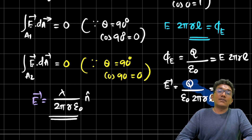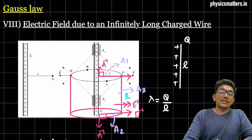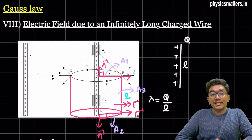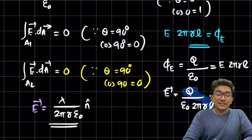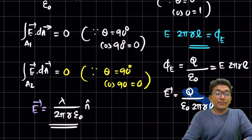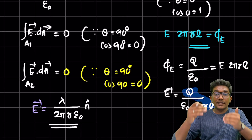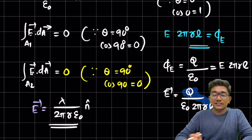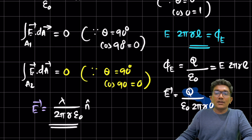So the final equation for the electric field due to an infinitely long charged wire is E = λ / (2πr ε₀). This is a very straightforward derivation — just apply the algorithm every time: find the integral of E dot dA for all surfaces, equate with total Q enclosed divided by ε₀, and solve for E. If you have any doubts, please ask. Thank you.